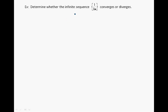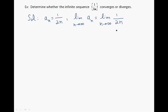Let's now look at an example: determine whether the infinite sequence 1 over 2n converges or diverges. And here's the solution. What we have is a limit at infinity — the limit as n approaches infinity of 1 over 2n, which we know is equal to 0. Hence we say that the sequence converges to 0.